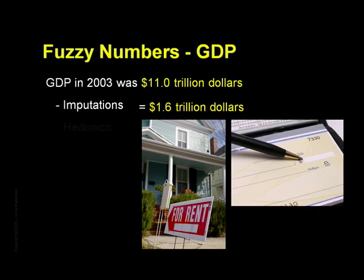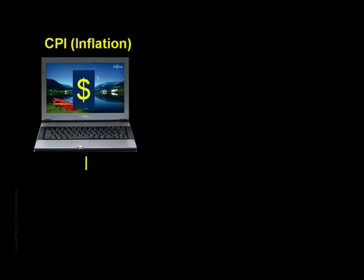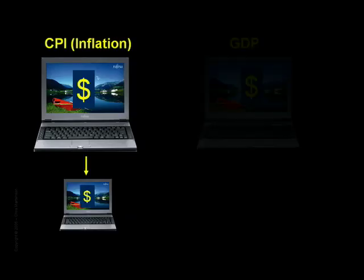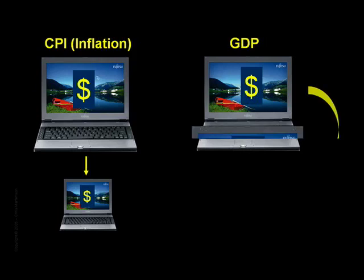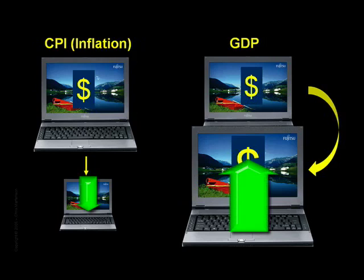Next, the GDP has many elements that are hedonically adjusted. For instance, computers are hedonically adjusted to account for the idea that because they are faster and more feature-rich than in past years, they must be contributing more to our economic output than their price alone would indicate. So if a $1,000 computer were sold, it would be recorded as contributing more than $1,000 to the GDP. That extra money is fictitious in the sense that it never traded hands. What's interesting is that for inflation measurements, hedonic adjustments are used to reduce the apparent price of computers, but for GDP calculations, hedonic adjustments are used to boost their apparent price. Hedonics, therefore, are used to maneuver prices higher or lower depending on which outcome makes things look more favorable.